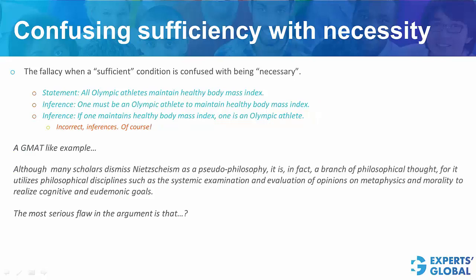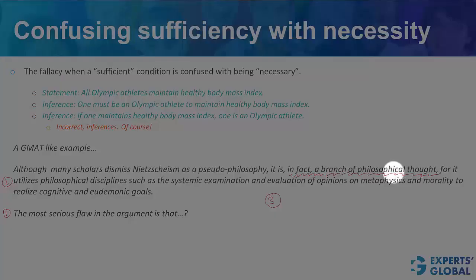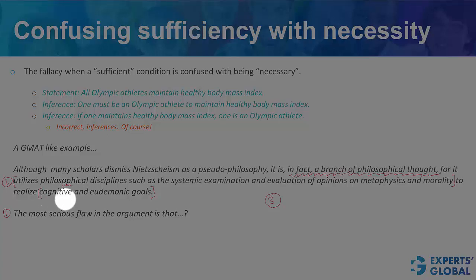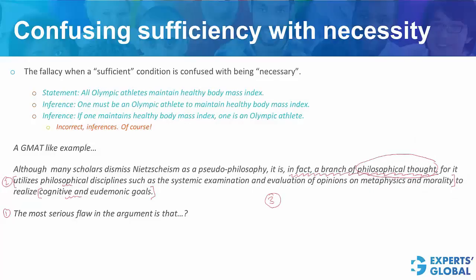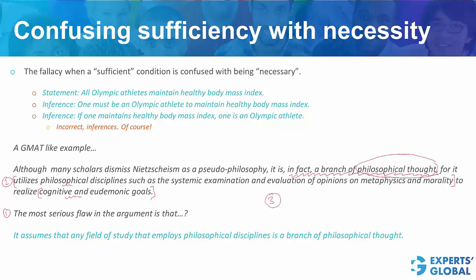Let's look at a GMAT-like example now. Step one: read the question stem. Step two: read the argument. Step three: come up with a broad expectation from the correct answer choice. Please pause the video and figure it out. The flaw is that this conclusion has been reached on the basis of this information — it utilizes all of this to realize all of this. But whether anything that utilizes all of this and realizes all of this is a branch of philosophical thought has not been established. This has been assumed, and that is the flaw in this argument.